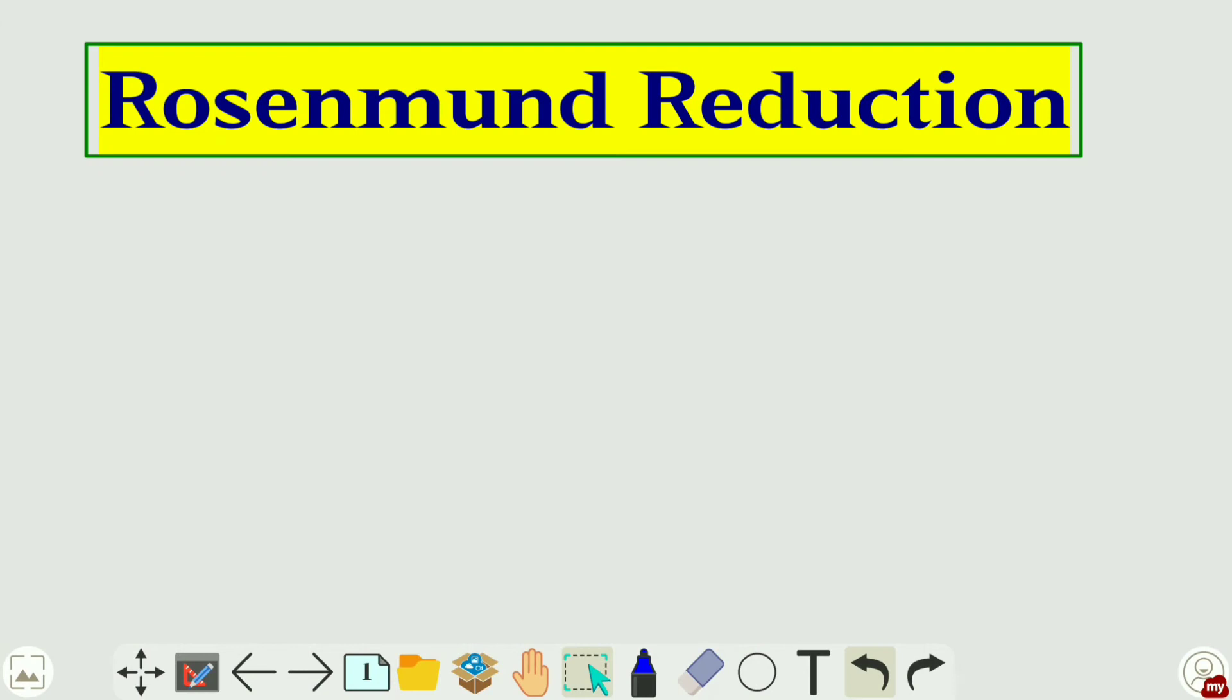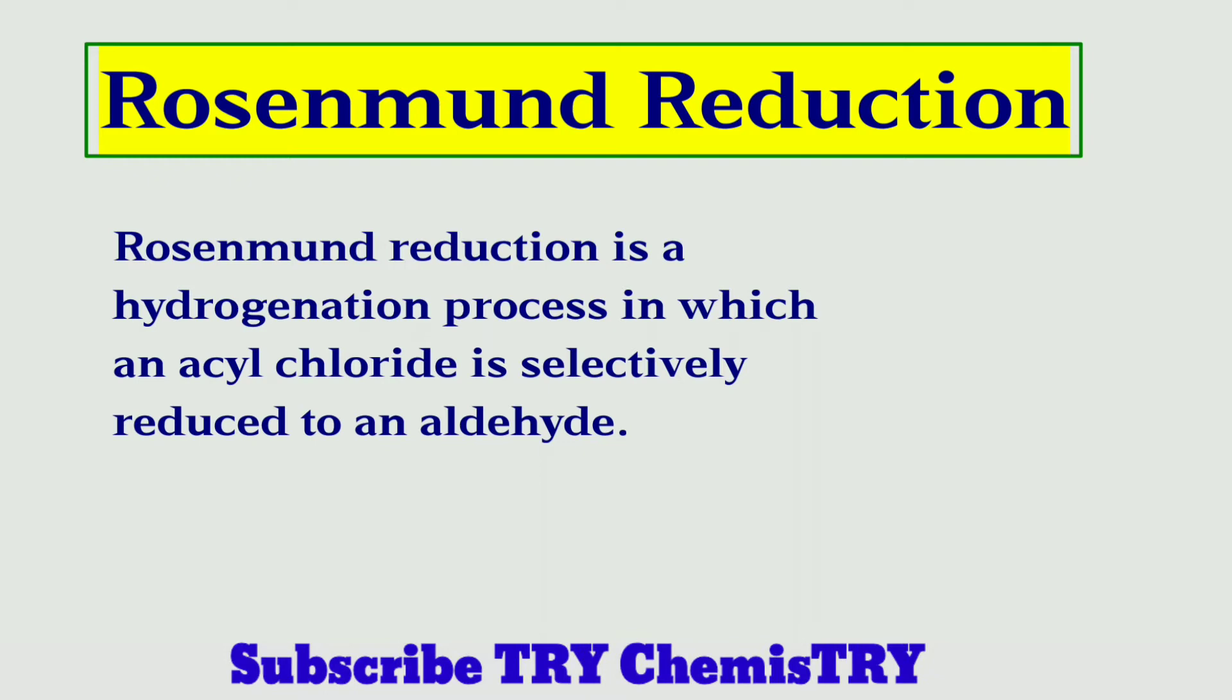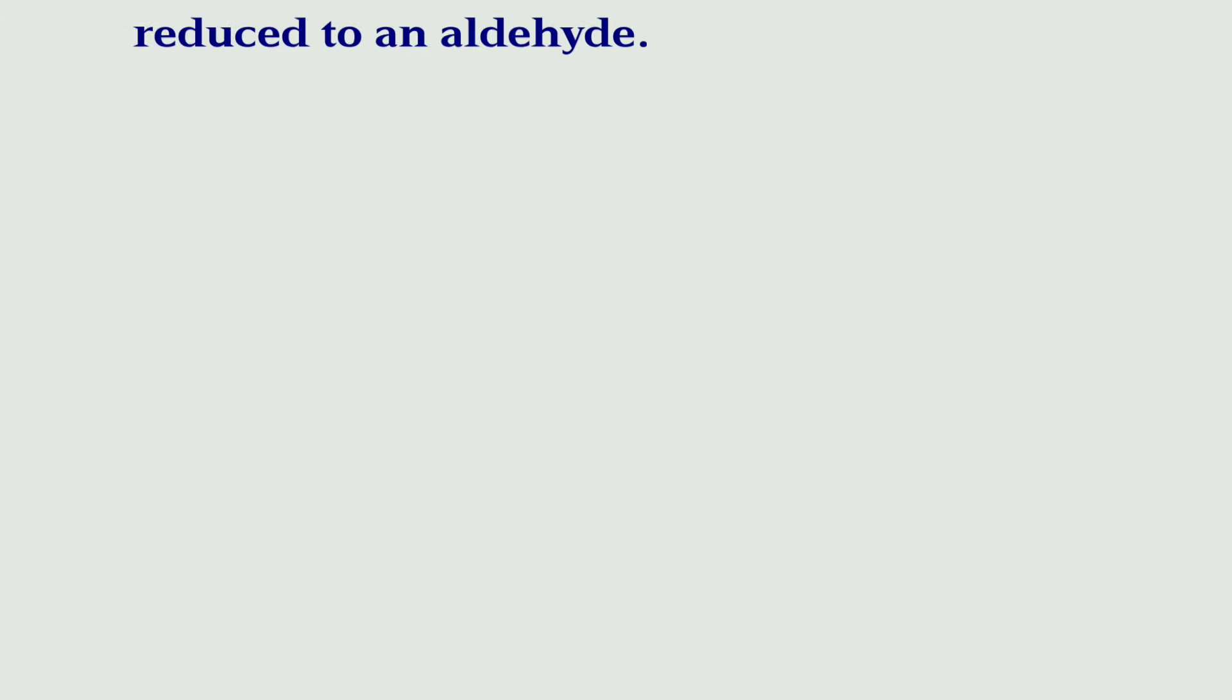Hello students, today we are going to discuss Rosenmund reduction. What is Rosenmund reduction? Rosenmund reduction is a hydrogenation process in which an acyl chloride is selectively reduced to an aldehyde. Let me discuss the chemical reaction.